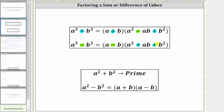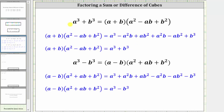Now before we apply these formulas, let's verify the products on the right give us a sum or difference of cubes. Let's first take the formula for a cubed plus b cubed by determining the product on the right. When multiplying a binomial and a trinomial, we have six products. We first distribute a, which gives us three products, and then we distribute b, which gives us three more products.